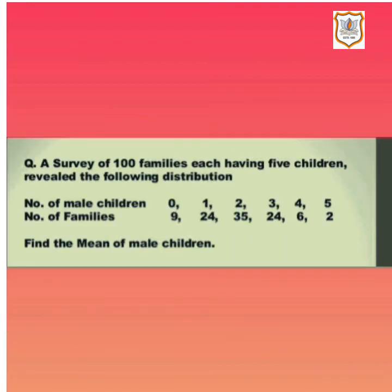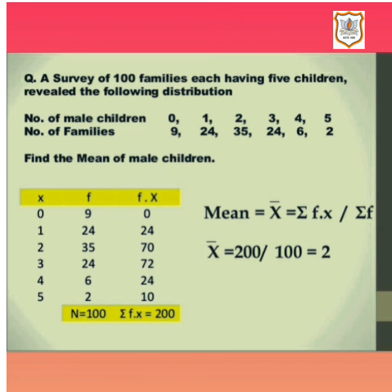Here the example is given: a survey of 100 families, each having 5 children, revealed the following distribution — number of male children: 0, 1, 2, 3, 4, 5; number of families: 9, 24, 35, 24, 6, 2. Find the mean of male children. Since this data is given in a proper table form, it is grouped data and will be solved accordingly.